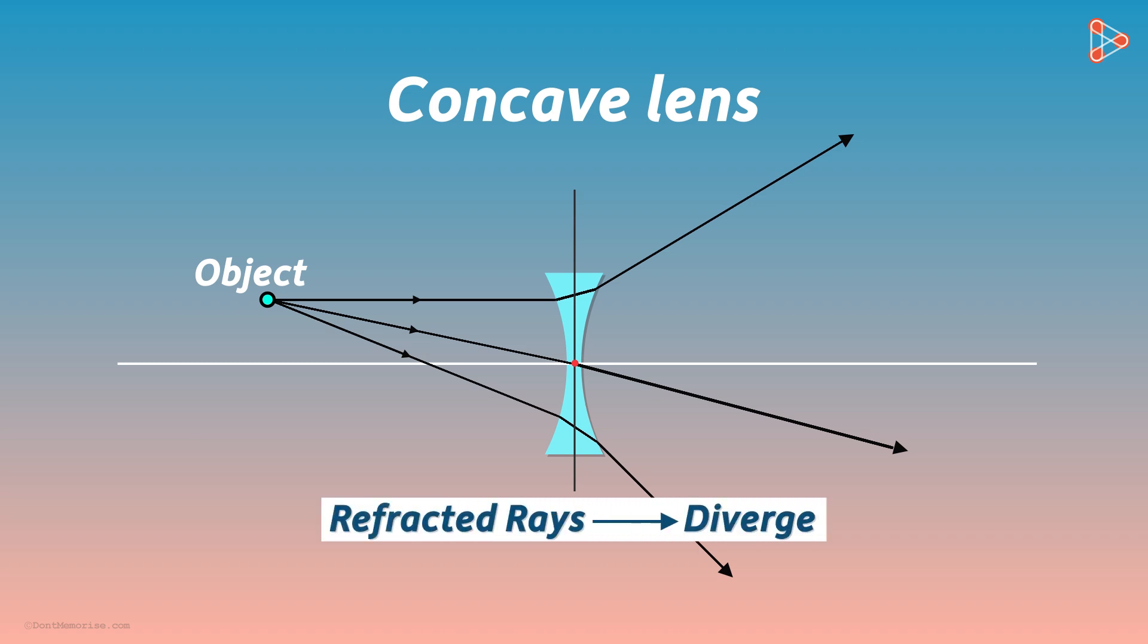These refracted rays diverge. It means they go away from each other. But wait! Since they do not intersect at a common point, does that mean no image is formed? Well, the image is formed.